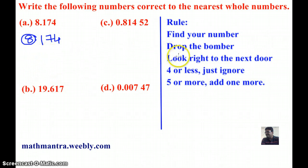Next I need to look right to the next door. So next door to 8 is 1. Now 1 is less than 4, and the rule says that if it is less than 4, just ignore. So I am not going to change anything and write the whole part as my answer.